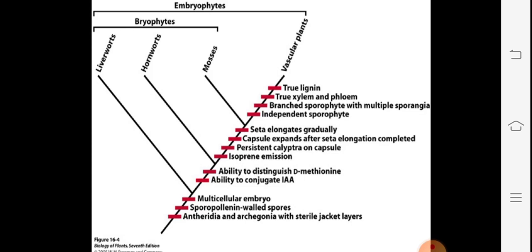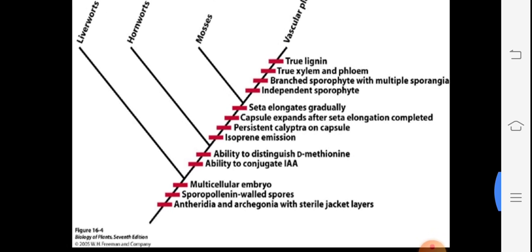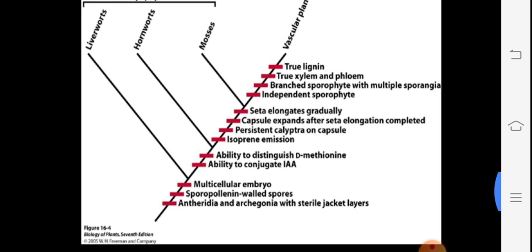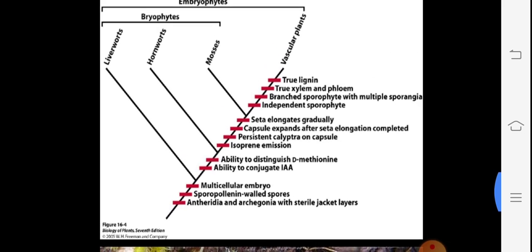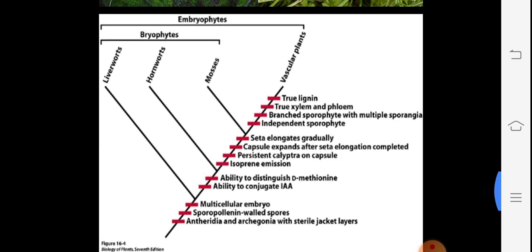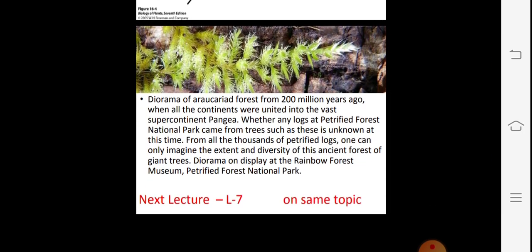Studies have detected these characters under certain conditions — for example, the ability to distinguish D-methionine and the ability to conjugate indoleacetic acid. Some growth regulators and growth inhibitors are known and to be tested. In liverworts, the multicellular embryo is a character. Sporopollenin — generally the wall of the spores — is present, and antheridia and archegonia with sterile jacket layers are there, also a comparative character with algae.